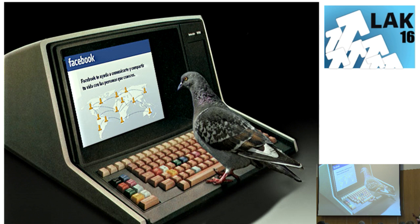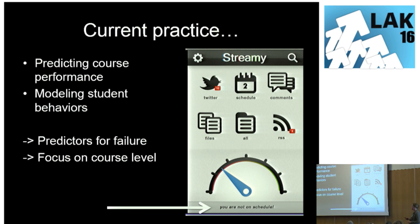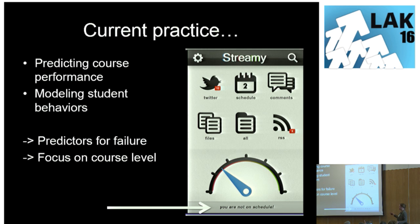If we look at the current practice of learning analytics, it's still predicting course performance and modeling students' behavior, mainly aimed at identifying students at risk. You have a notification like 'you're not on schedule,' so I can log in, press some buttons, and appear on schedule. But did I learn anything? Probably not. So we know a lot about predictors for failure, and we mainly focus on a course level.